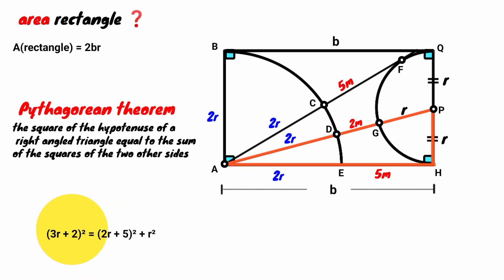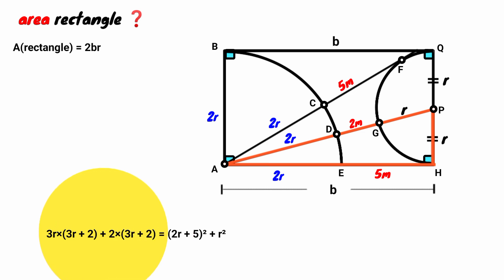2R plus R is 3R. 3R plus 2 all squared is 3R plus 2 times 3R plus 2, which is 3R times 3R plus 2 plus 2 times 3R plus 2. 3R times 3R plus 2 is 9R squared plus 6R, and 2 times 3R plus 2 is 6R plus 4. 6R plus 6R is 12R. So it is 9R squared plus 12R plus 4.